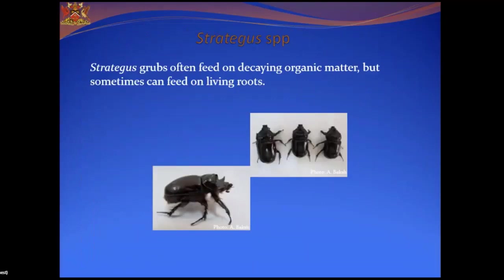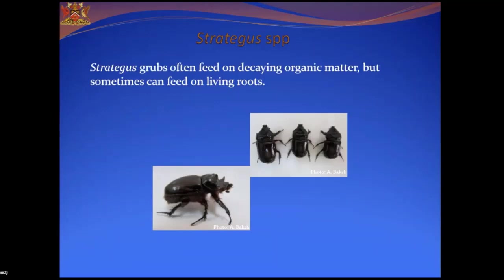For the boring insects, Strategus species was found more in the Cedros area. However, it has beneficial habits in that it feeds on decaying organic matter. Sometimes it can feed on living roots, and it was found in the Cedros area feeding on seedling coconut trees newly planted in the field. The population level and the damage were not substantial enough to warrant chemical treatments. However, if this pest is found affecting localized areas, targeted treatment can be done.